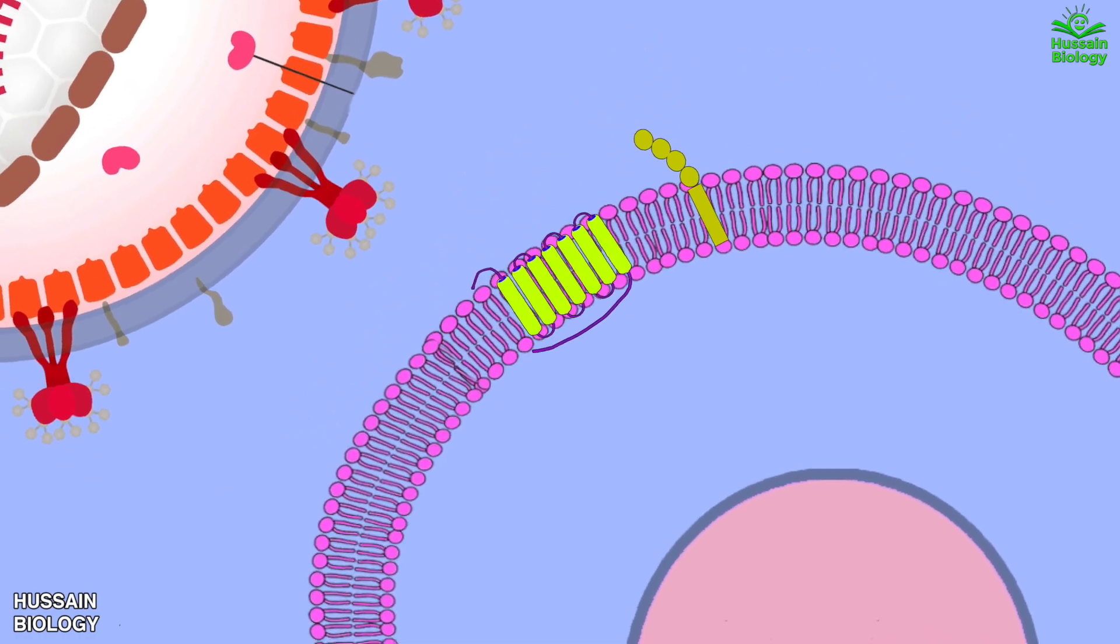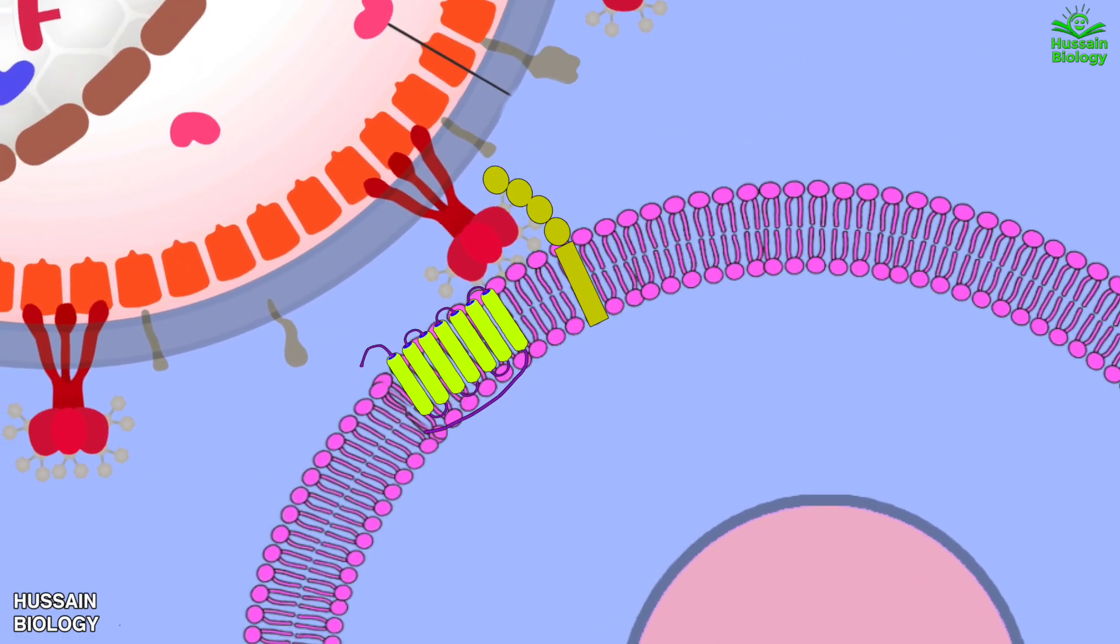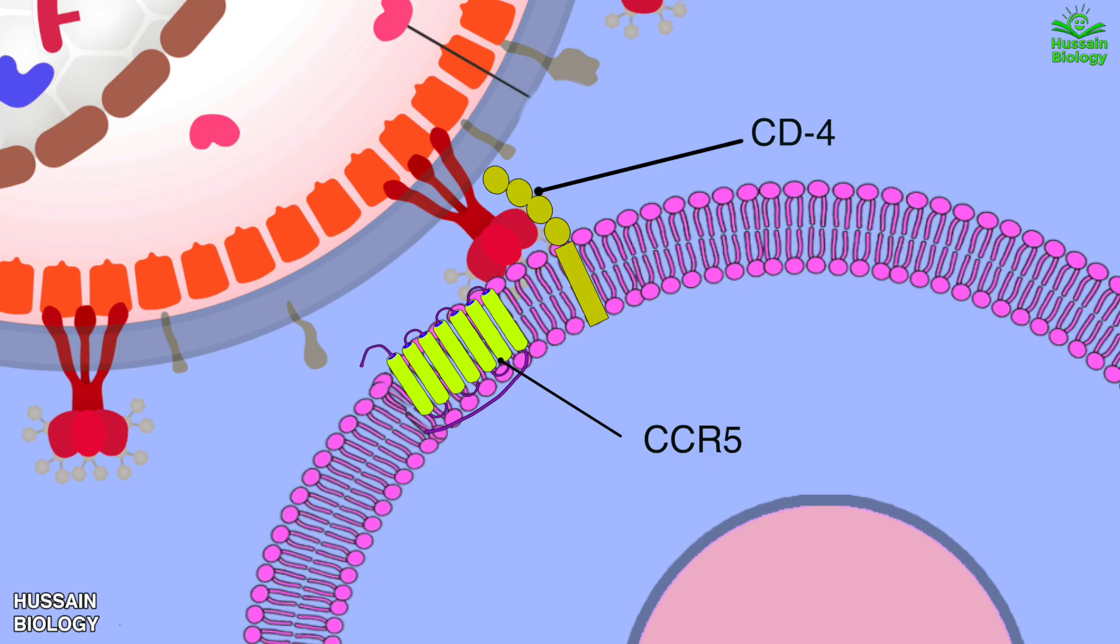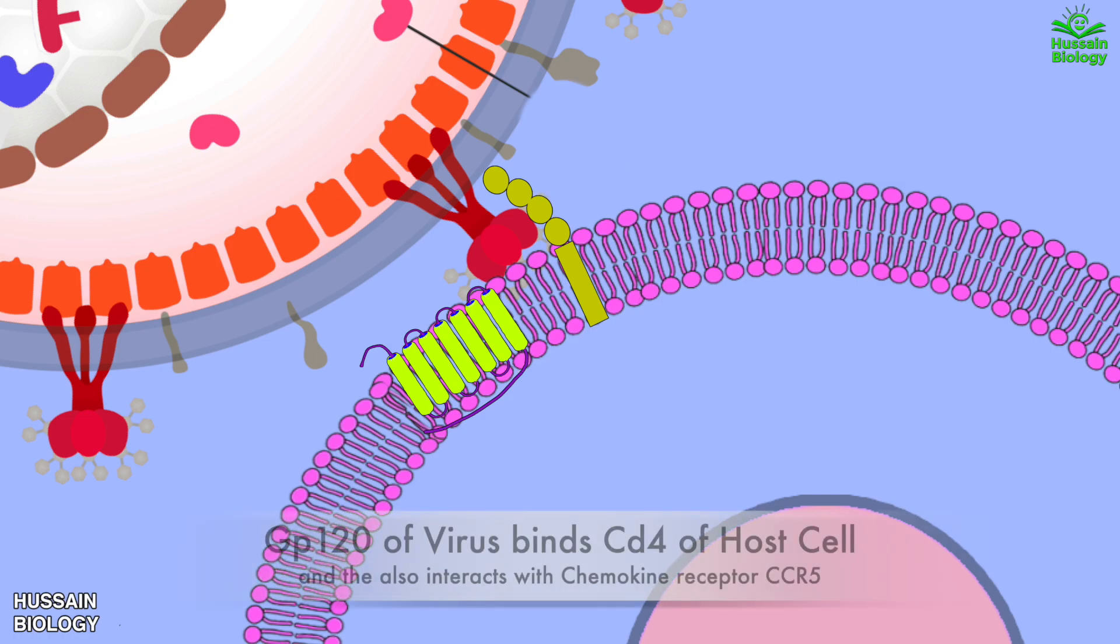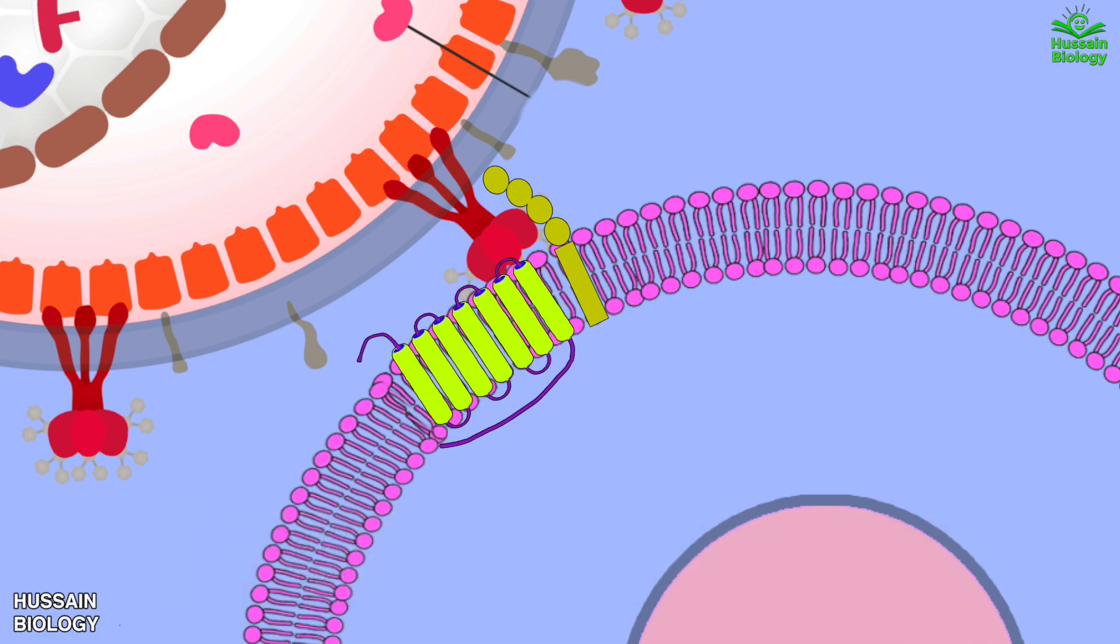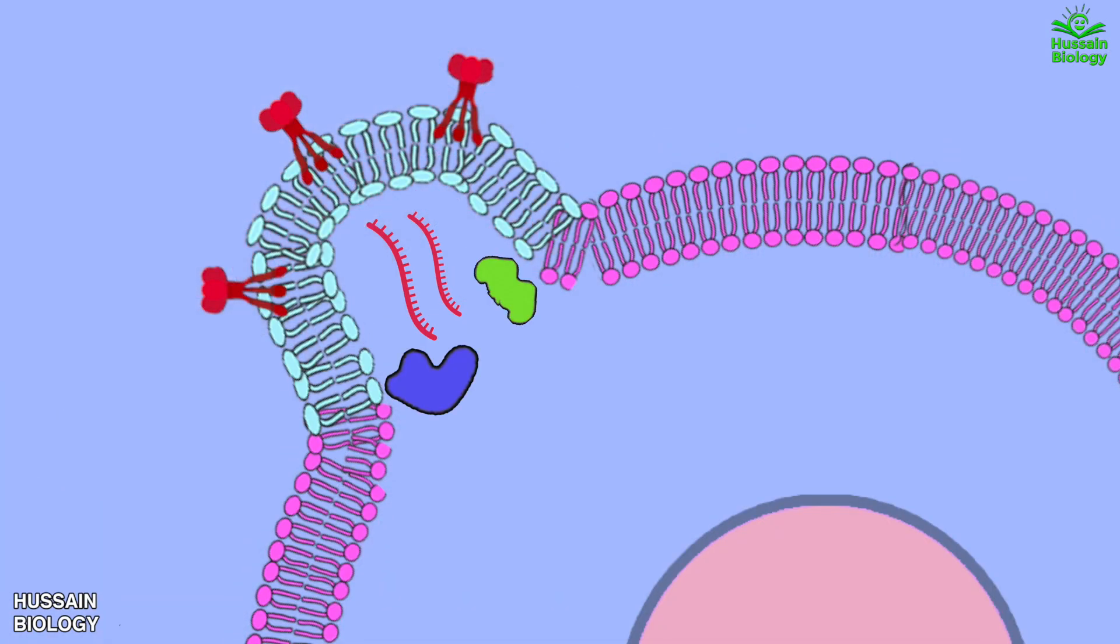To start the infection process, HIV comes in and starts attachment with the host cell. The GP120 protein of HIV binds with the CD4 of the host cell. In the next step, the GP120 variable loop attaches to the coreceptor CCR5. This binding results in releasing the GP41 molecule from its metastable conformation, and it inserts this GP41 into the membrane of the host cell. This interaction drives the fusion of HIV with the host cell.